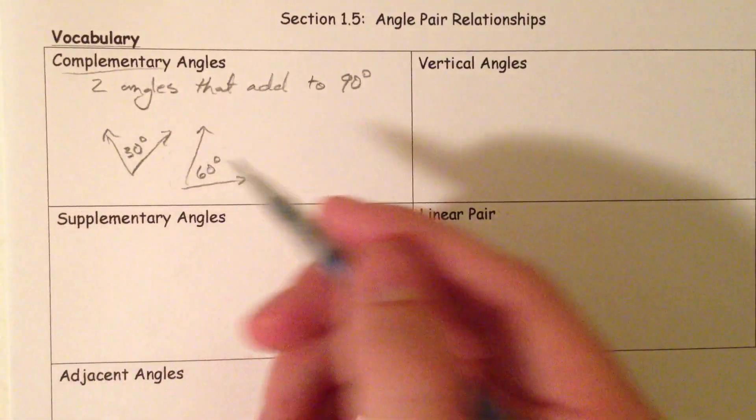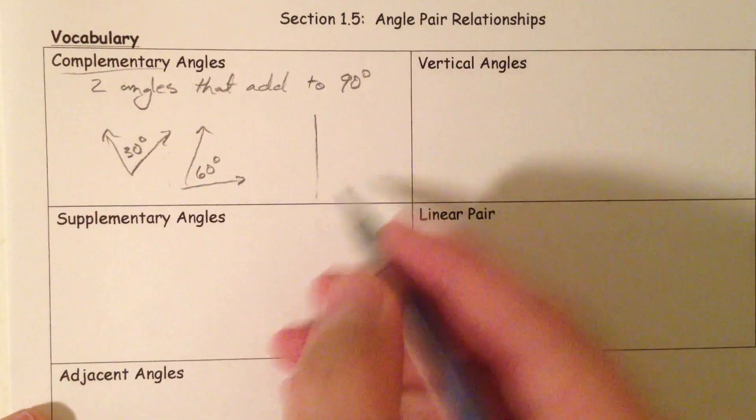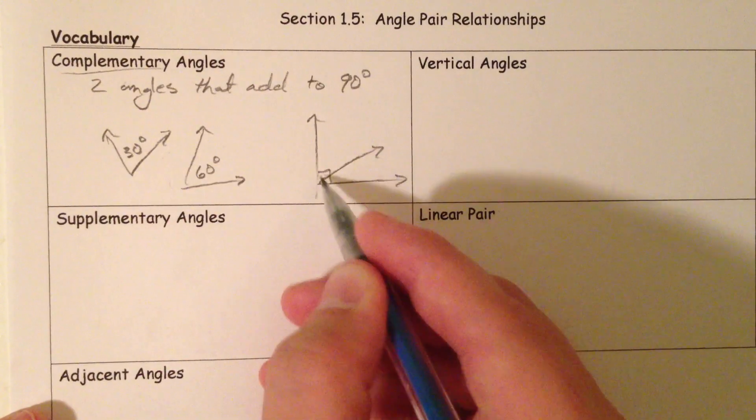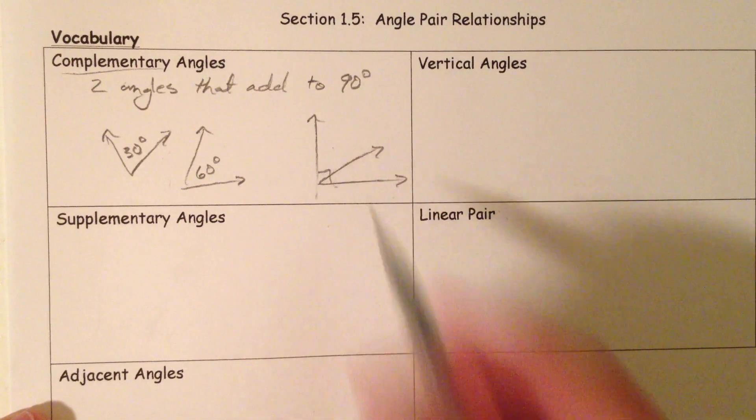Now they could be separate from each other or they could be together and you might be able to see it a little easier if they had it like this. They've got the 90 degree mark and you've got two angles right there.